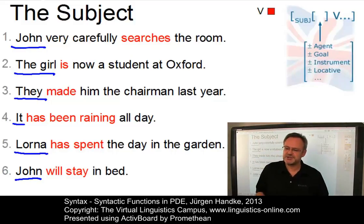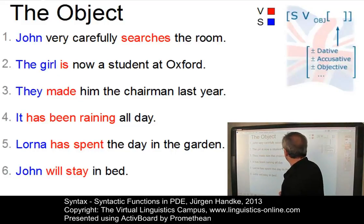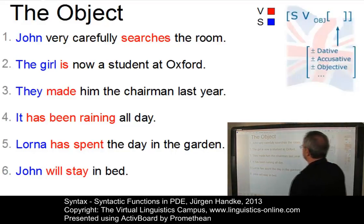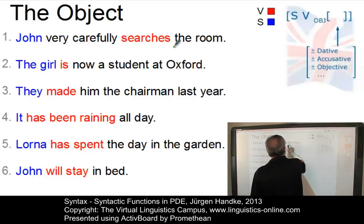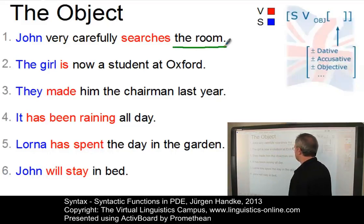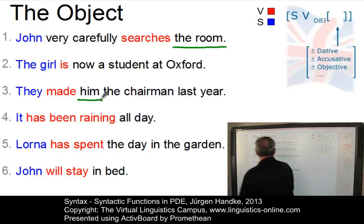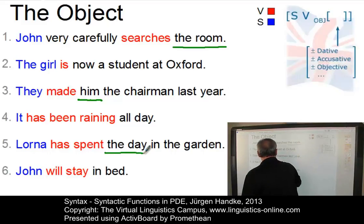Having identified the subjects and the verbs, let us now look at the objects in our sentences. Subjects are marked blue and the verbs are marked with a red color, so let's select green for our objects. We have an object in number one: the room. We have an object in number three: him. And we have an object in number five: the day.